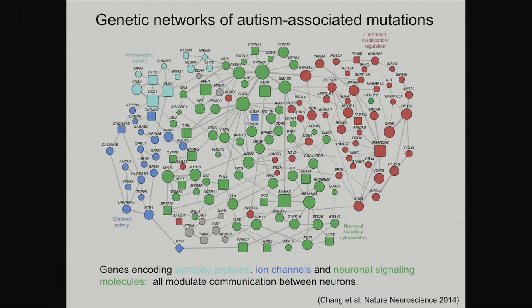Plenty of smart people are trying to characterize these genes by putative function. The light blue ones are synaptic proteins, others are ion channels that pass currents, some are molecules important in intracellular signaling in neurons, and others are transcriptional regulators — which are thought to regulate those other families. Looking from 1,000 feet up, you basically see that a lot of these genes have a role in modulating communication between neurons.